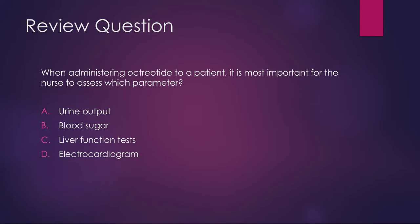Review question: When administering octreotide to a patient, it's most important for the nurse to assess which parameter? The answer is blood sugar. Octreotide can actually cause labile blood sugars, so we have to closely monitor them. Even if they're not diabetic, we will monitor their blood sugars.